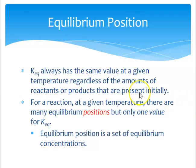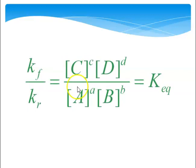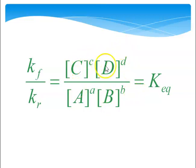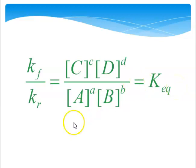Your K_eq always has the same value at a given temperature, regardless of how much you started with. For a reaction at a given temperature, there are many equilibrium positions but only one value of K_eq. An equilibrium position is a set of equilibrium concentrations. If K_eq equals 100, how many different sets of numbers can you put in the expression and have it equal 100? It's almost infinite — there are so many different concentration values you can put in that would equal 100. Every set of concentrations that equals your K_eq is called an equilibrium position.